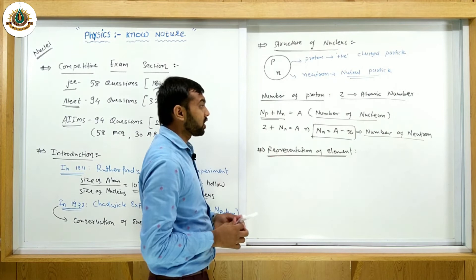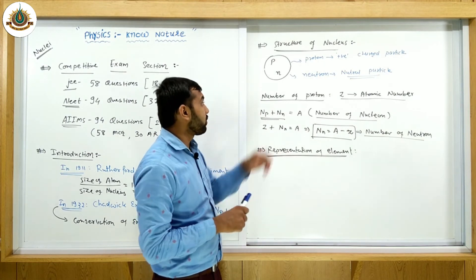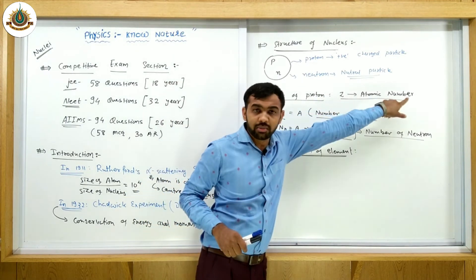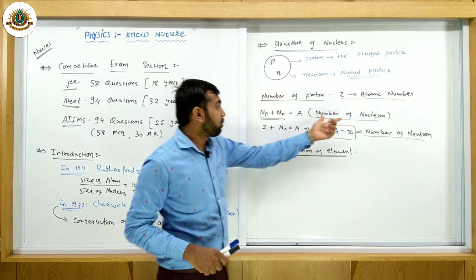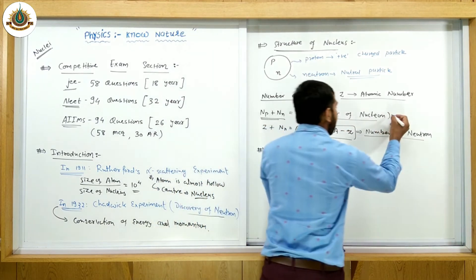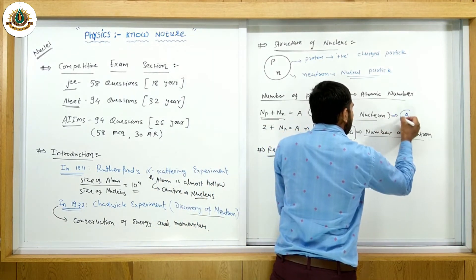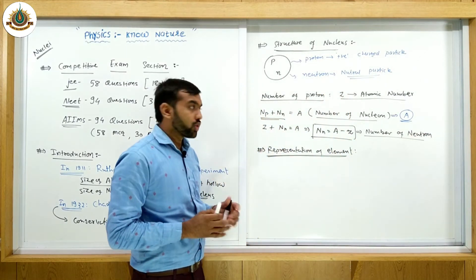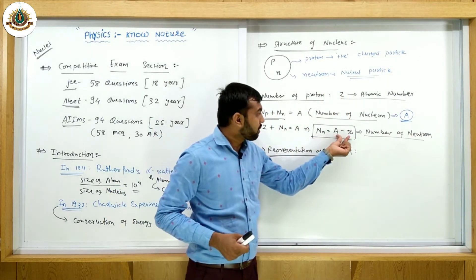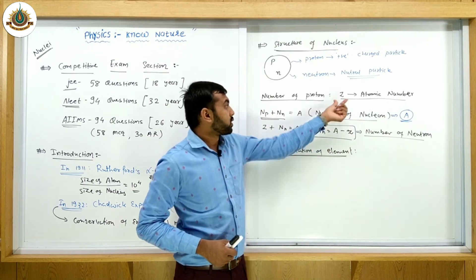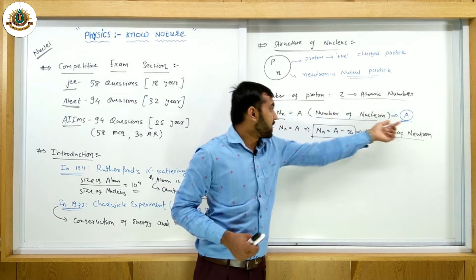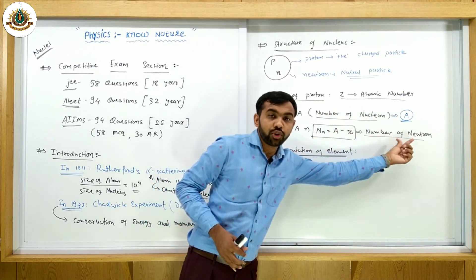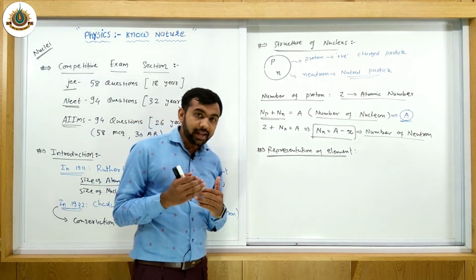Three important things to note: first, the number of protons is denoted by Z, which is the atomic number. Second, the total number of nucleons is denoted by capital A. Third, the number of neutrons is denoted by A minus Z. So Z is the atomic number, A is the total number of nucleons, and (A − Z) gives the number of neutrons.